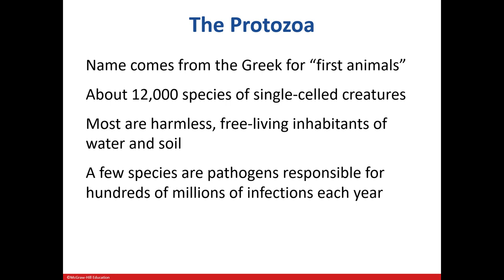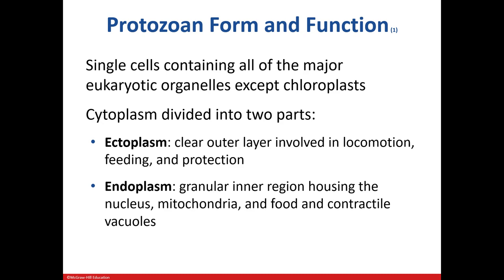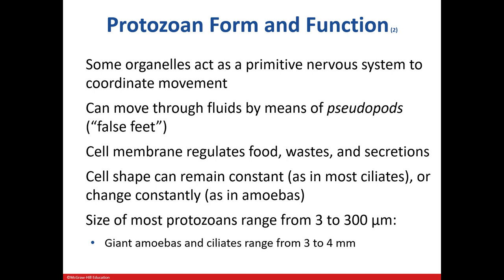Protozoa, or first animals, are single-celled organisms. They are mostly harmless and can be found in water and soil, though some can cause infections in humans. Protozoans have all major structures found in eukaryotes except the chloroplast. They're different in that their cytoplasm is in two parts, each with a specific function for movement or feeding. Some have an early nervous system for movement, some have pseudopods to crawl around, their cell membrane helps regulate movement of food and waste, and some have the ability to change shape.